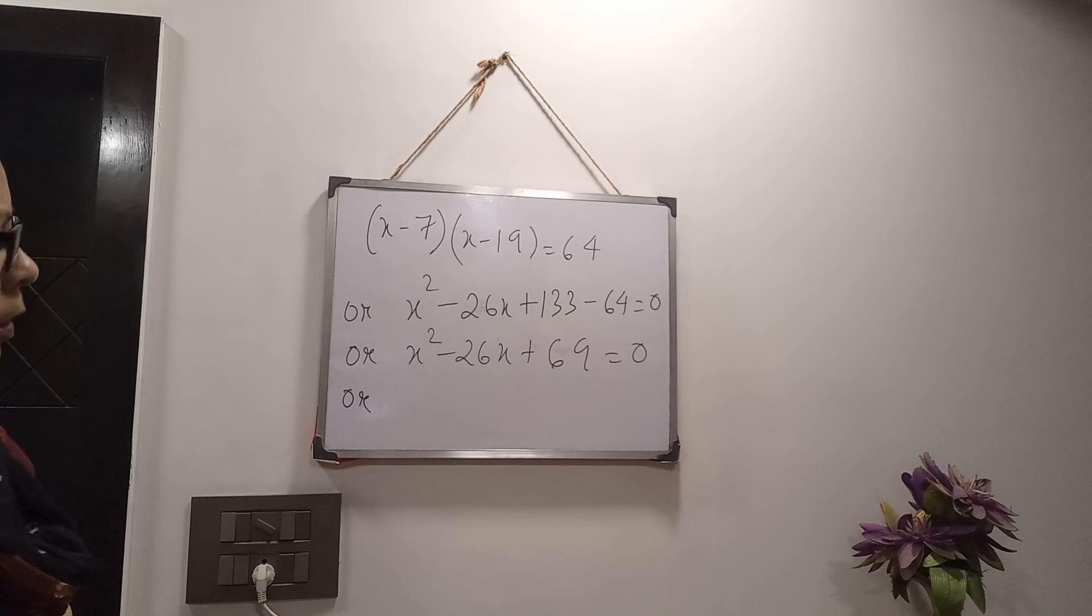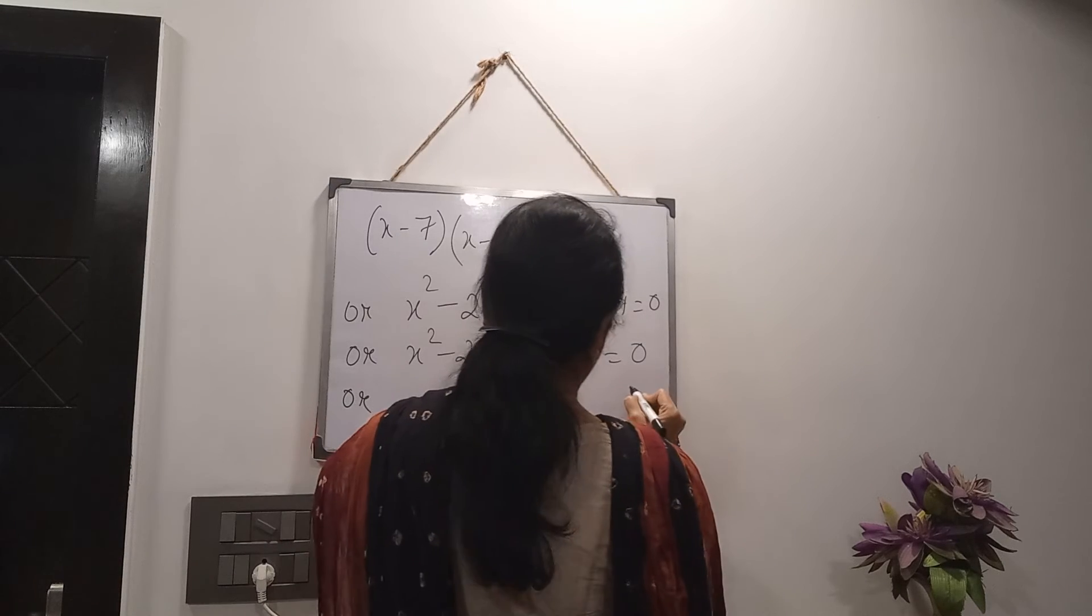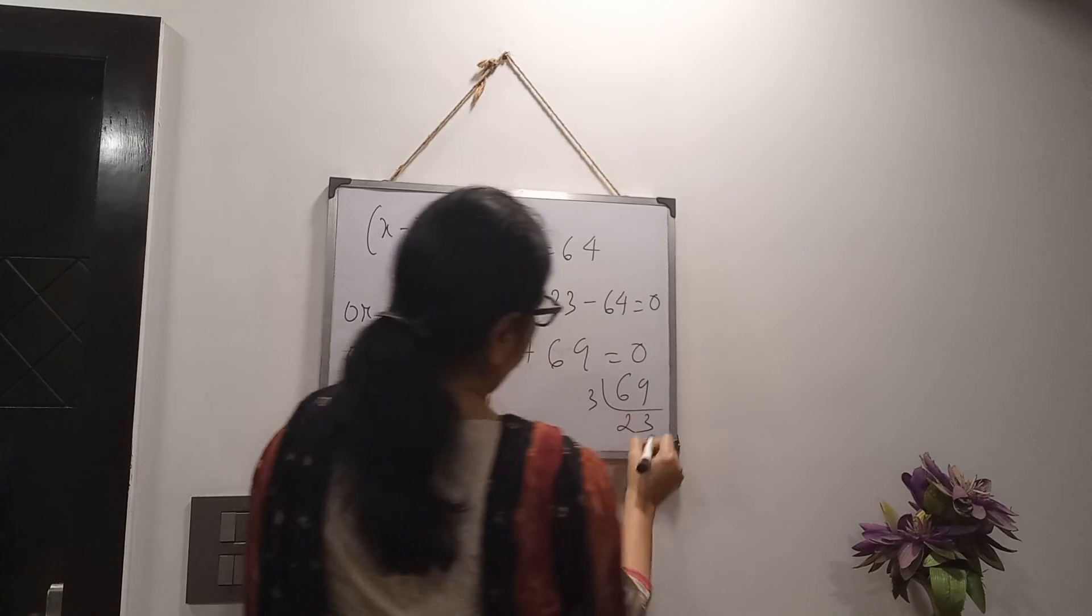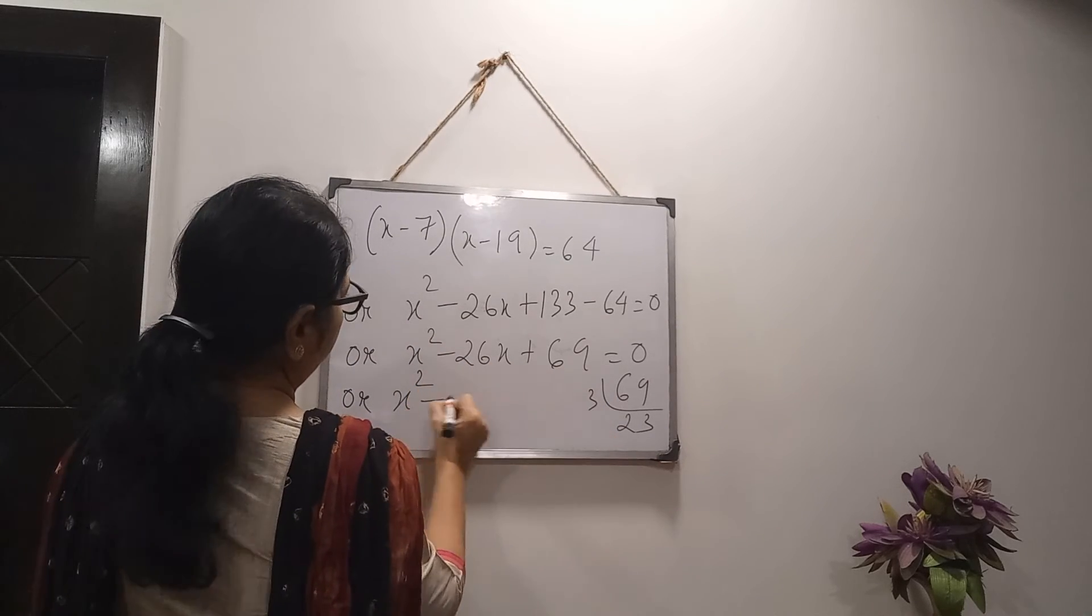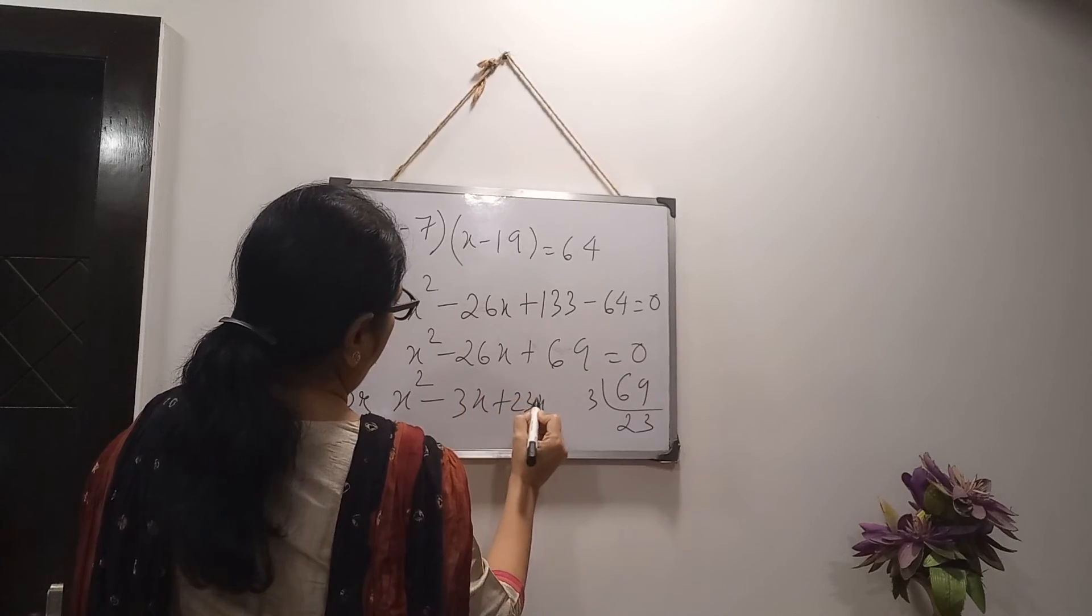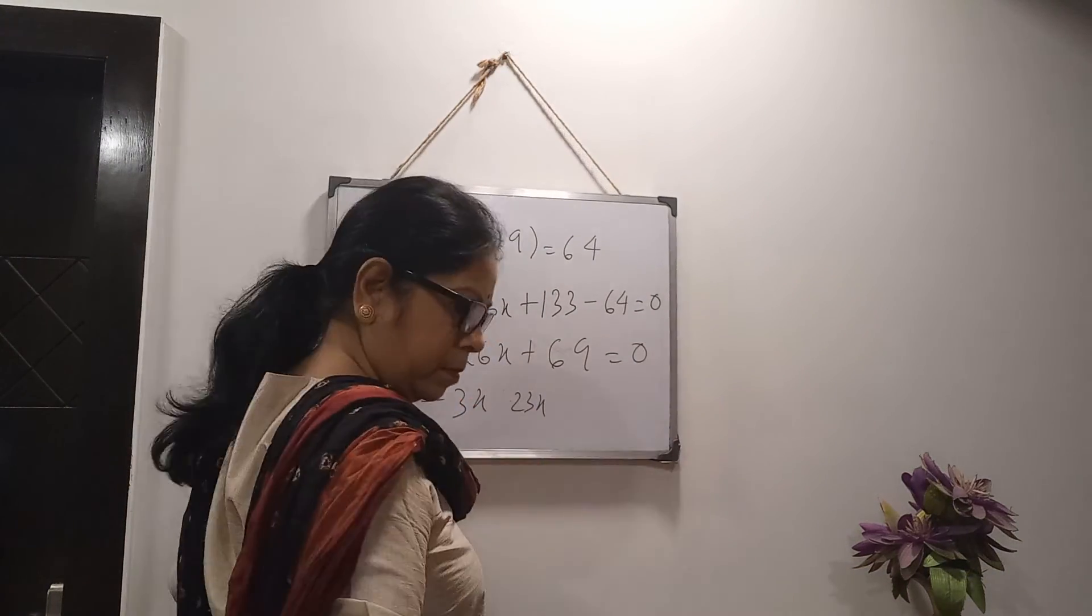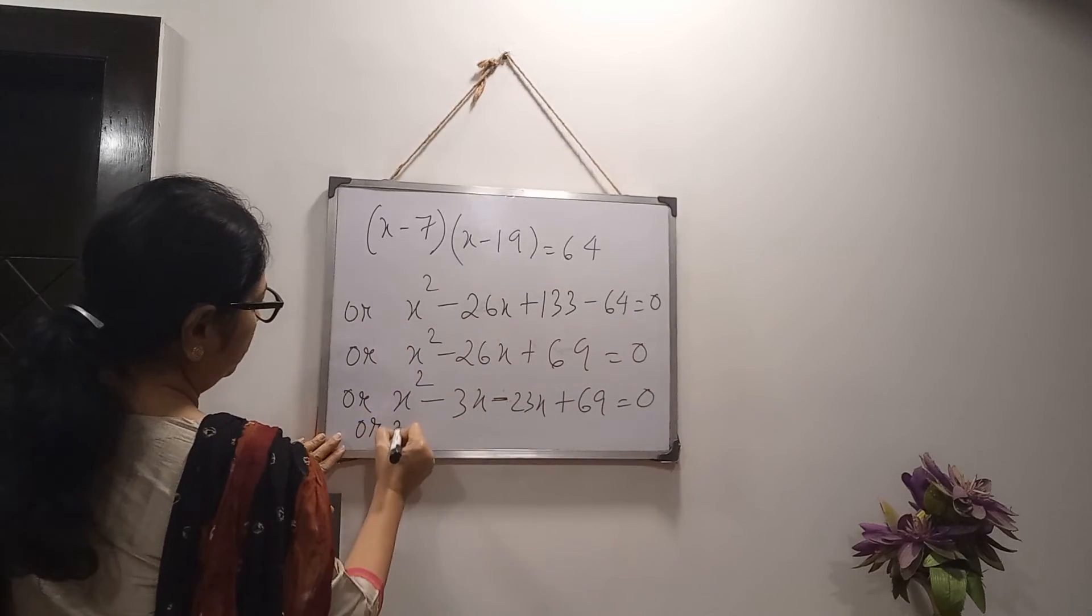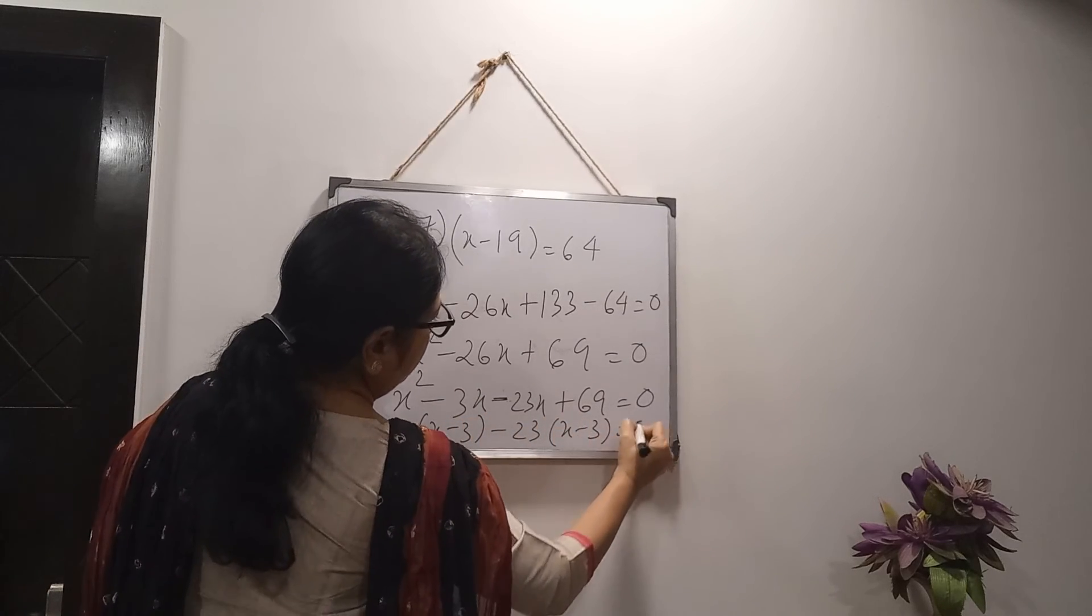Then, we have to find out the factors of 69. So, that's 26 will come. 69 by 3. And this is the prime number not possible over. That is coming. 23 and 3. That is 3x plus 23x plus 69 equals to 0. Now, take x common. x minus 3. Minus 23 common. x minus 3 equals to 0.